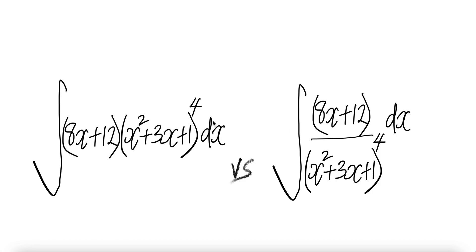Let's look at these two integrals. The integral of 8x plus 12 times x squared plus 3x plus 1 to the power of 4, versus the integral of 8x plus 12 divided by x squared plus 3x plus 1 to the power of 4.